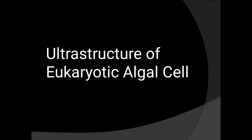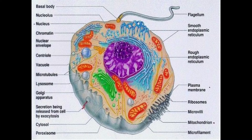Now we will discuss about the eukaryotic algal cell. This is the diagram of eukaryotic algae. You can see different organelles here: the basal body, nucleolus, nucleus chromatin, nuclear envelope, centriole, vacuole, microtubules, lysosome, Golgi apparatus, secretion being released from the cell by exocytosis, cytosol, peroxisome, flagellum, smooth endoplasmic reticulum, rough endoplasmic reticulum, plasma membrane, ribosome, microvilli, mitochondrion, and microfilament.